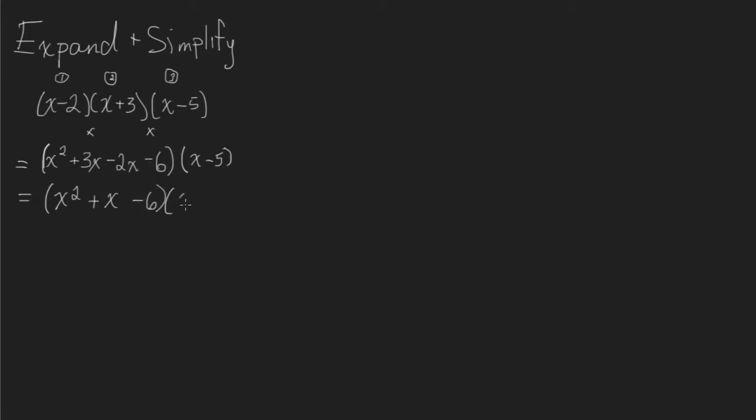And this is going to be much nicer to then multiply times this bracket here. And so we end up with x to the power of 3, minus 5x squared, plus x squared, minus 5x, minus 6x, and negative 6 times negative 5 is positive 30.